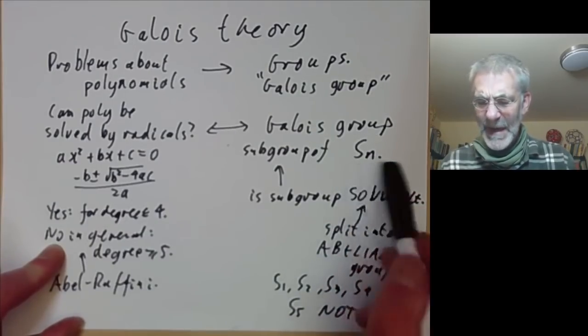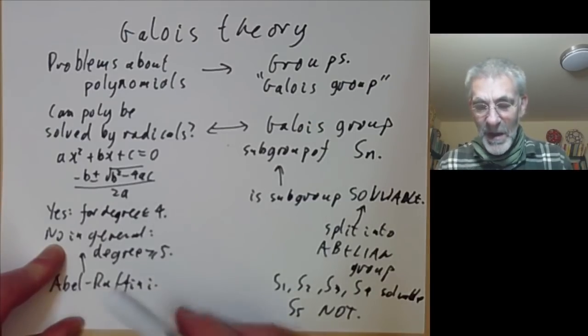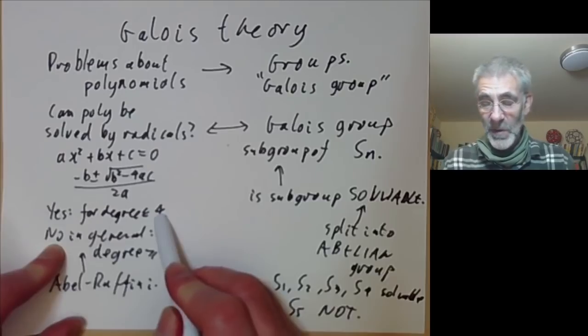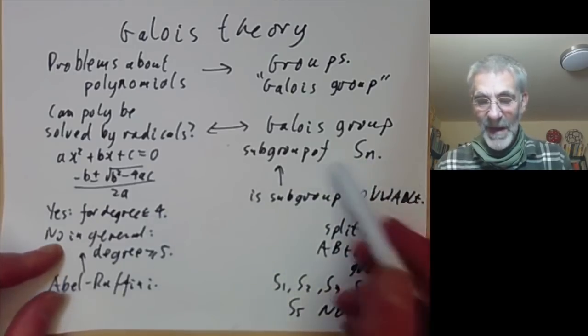We'll also be showing how you can solve an equation by radicals for degree at most 4 using the structure of the Galois group. If you don't know the Galois group this is actually very tricky to do. It's really impressive that people managed to solve equations of degree 4 without knowing about group theory.